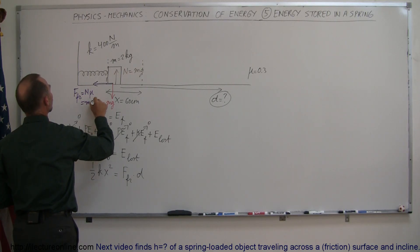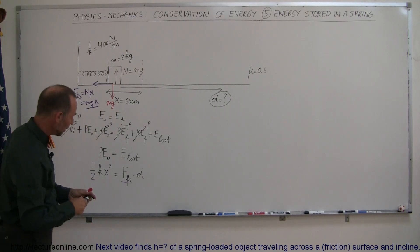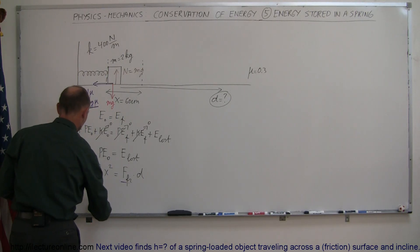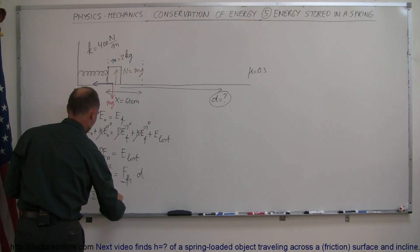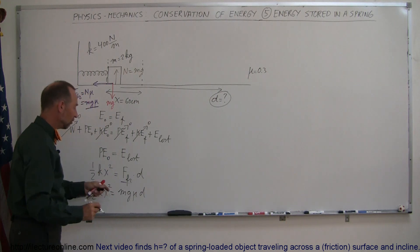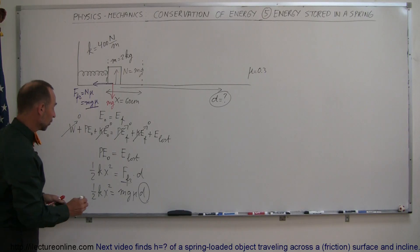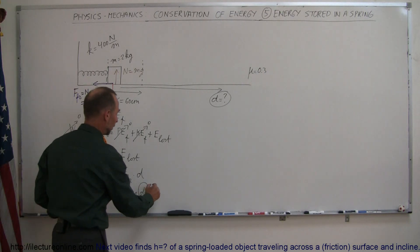So we can replace this for this, and then finally our equation becomes one-half k x squared is going to be equal to mg mu times d. And then this equation we have to solve for the distance traveled, so we're going to divide both sides by mg mu.